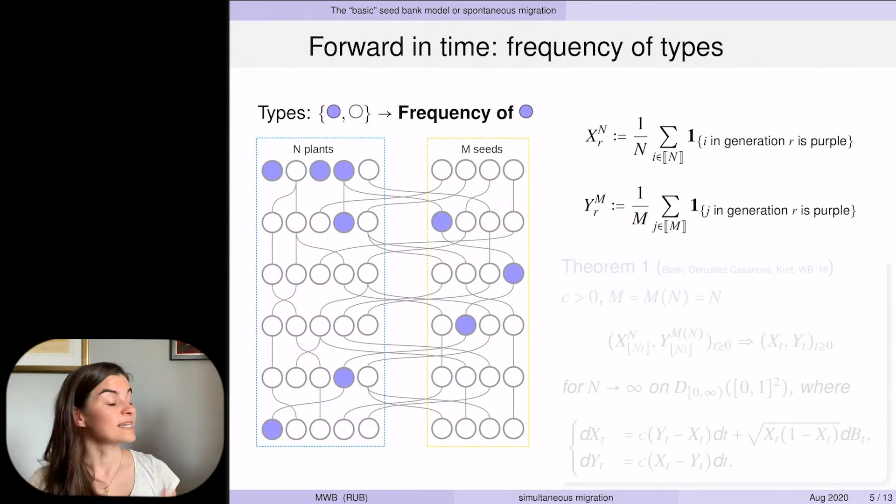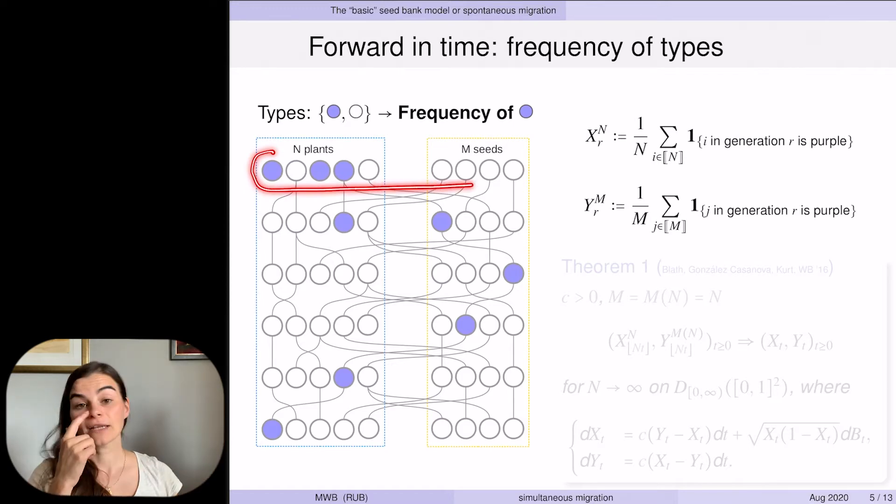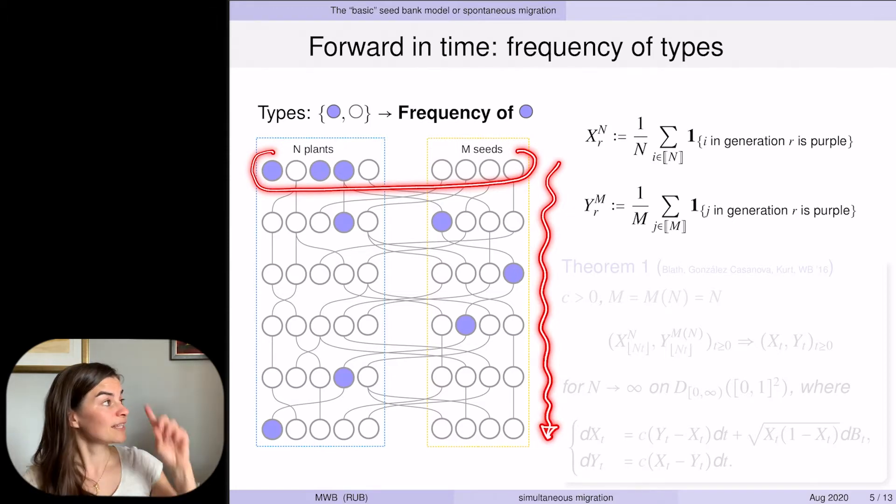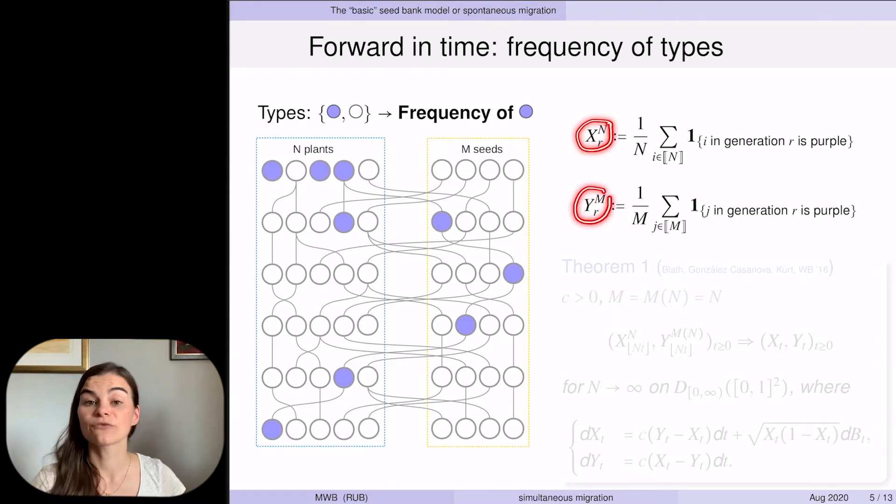Forwards in time we add types to our model—in this case purple and white—and we trace the fraction of purple individuals in our population. We assign purple and white at random in generation zero and then propagate the types forward by saying that the offspring inherits the type of the parent. X_N and Y_M are just the frequency of purple individuals in the active respectively the dormant generation population.